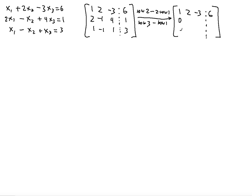So we get zero in the first positions: 2 minus 2 times 1 is 0. Then negative 1 minus 4 is negative 5; 4 minus negative 6 is 10; 1 minus 12 is negative 11. For the third row: 1 minus 1 is 0; negative 1 minus 2 is negative 3; 1 plus 3 is 4; and 3 minus 6 is negative 3. Now the next leading one needs to be in the second row, replacing negative 5.